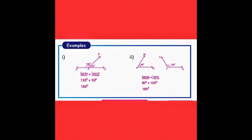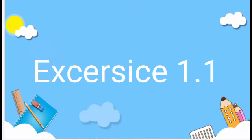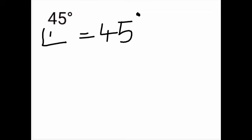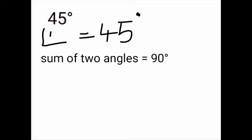That is what we are going to see now, with the help of Exercise 1.1, Question Number 1. The question gives 45 degrees. We consider this as Angle 1. We know that if adding two angles gives 90 degrees, they are complementary, and if it gives 180 degrees, they are supplementary. For Question 1, we need to find the other measure of the complementary angle. The sum of the two angles equals 90 degrees, so Angle 1 plus Angle 2 equals 90 degrees.